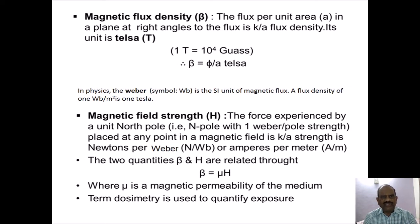In physics, Weber (symbol Wb) is the SI unit of magnetic flux. A flux density of 1 Weber per square meter is 1 Tesla. Magnetic field strength is denoted by capital H. The force experienced by a unit north pole, i.e., a north pole with 1 Weber per pole strength, placed at any point in a magnetic field is called magnetic field strength. Its unit is Newtons per Weber or Amperes per meter (A/m).